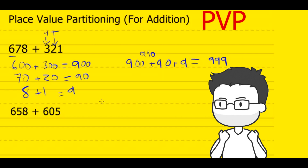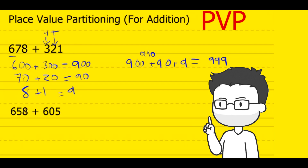Done! Now, another example. We have 658 plus 605. Step 1 is to break 658 into its place value parts. So we have 6 in the 100's column — that represents 600. We have 5 in the 10's column — that represents 50. And we have 8 in the 1's column — that's just 8.